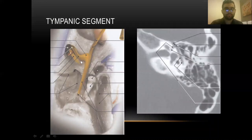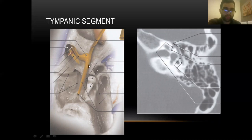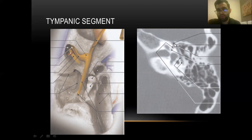The tympanic segment runs approximately eight millimeters after the geniculate ganglion. Importantly, it gives the nerve to the stapedius muscle — so a lesion at this level causes hyperacusis. It is situated between the incus and the lateral semicircular canal. Radiological images can demonstrate this horizontal segment clearly.